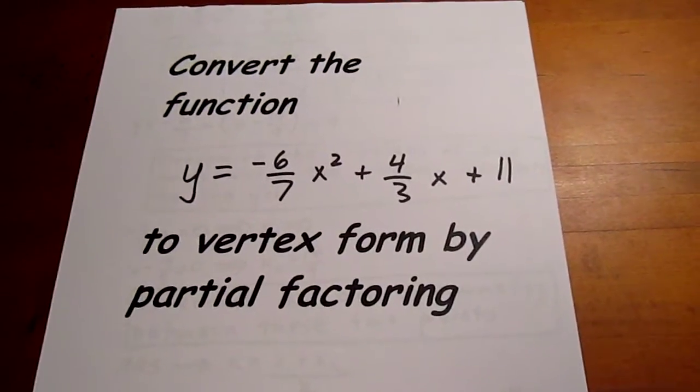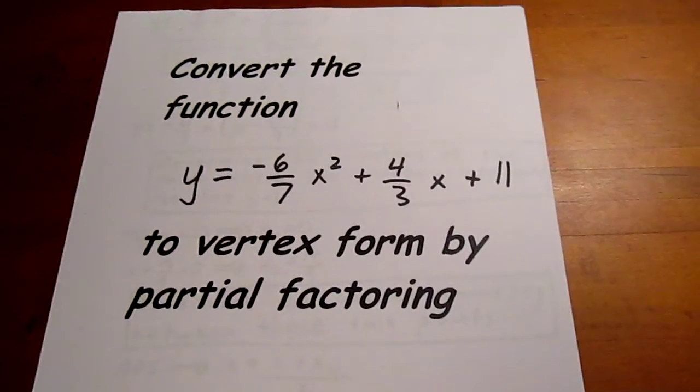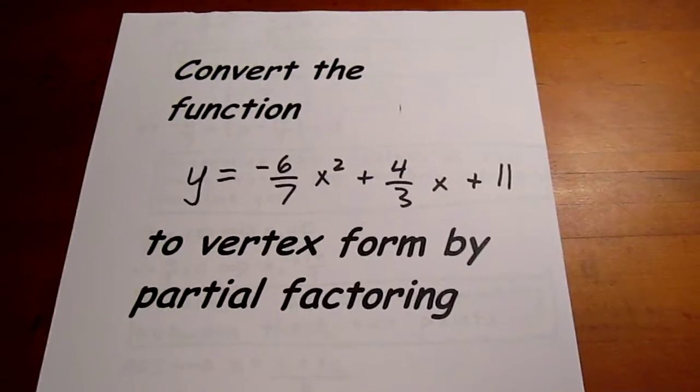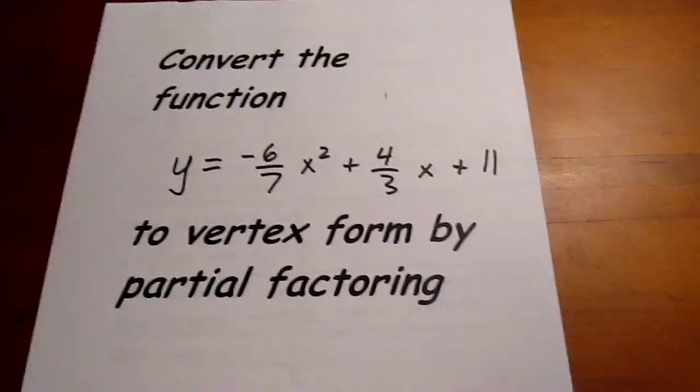We're going to convert the function y equals negative 6 over 7 times x squared plus 4 3rds x plus 11 to vertex form by partial factoring.